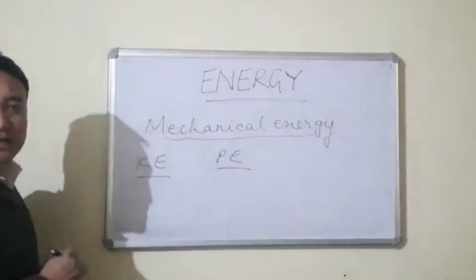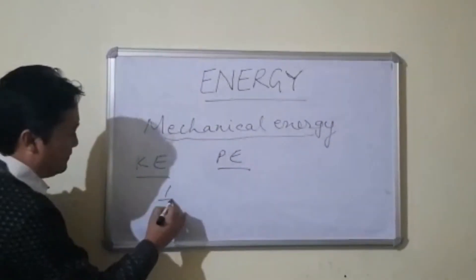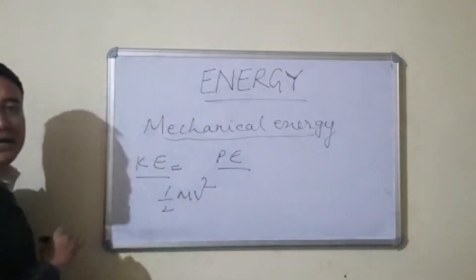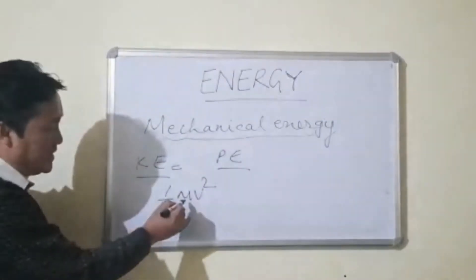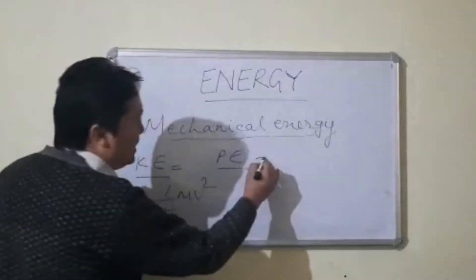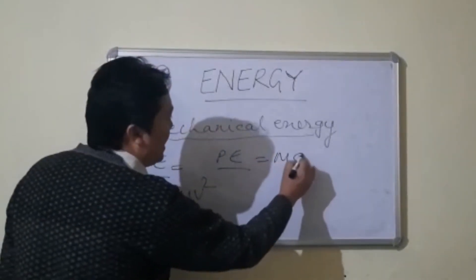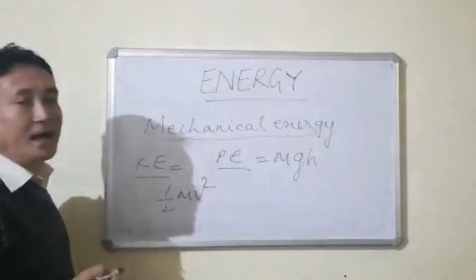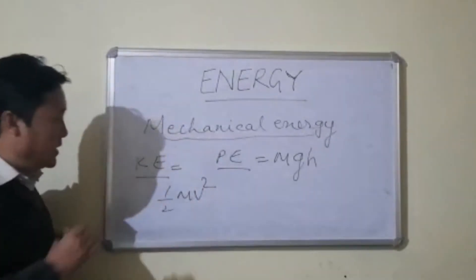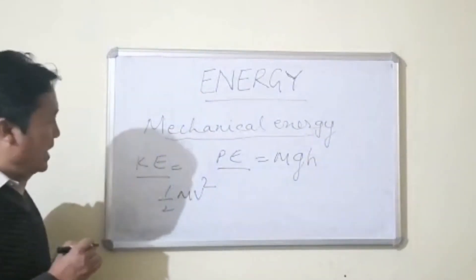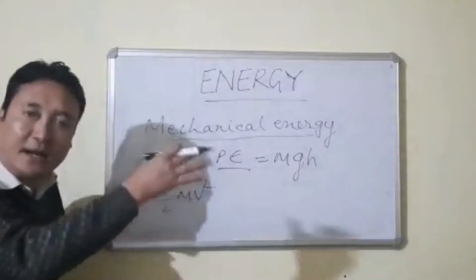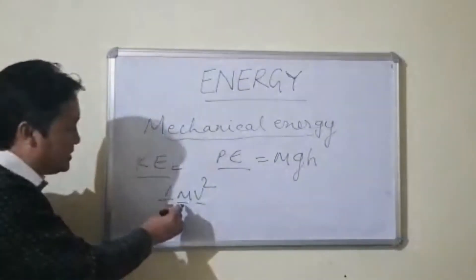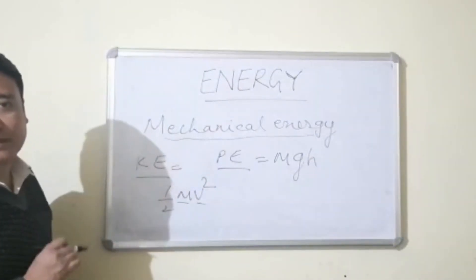Kinetic energy is given by the formula: half into mass into velocity squared, that is KE = ½mv², where m stands for mass and v stands for velocity. Potential energy is given by the formula PE = mgh, that is mass into acceleration due to gravity into height. Kinetic energy is directly proportional to the mass and velocity — when the mass of the body is more, kinetic energy will also be more.